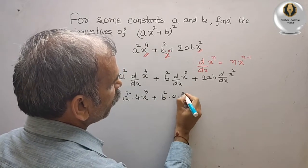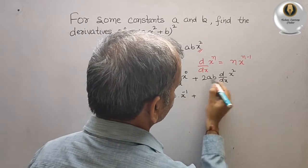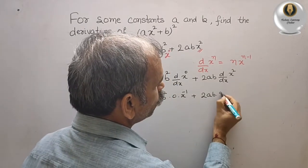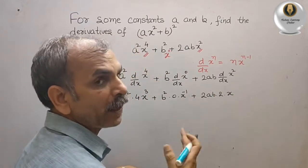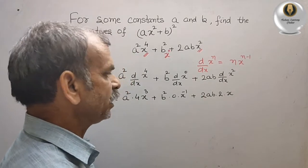And x to the power of -1, plus this is your 2ab into 2 and x. You know 2 minus 1 is 1, that is x. Now you can see here...